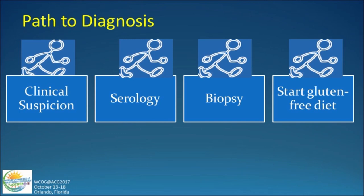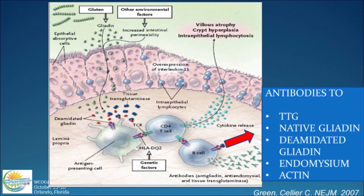A byproduct of this inflammatory response is the generation of antibodies: antibodies to tissue transglutaminase, antibodies to gliadin, antibodies to deamidated gliadin peptides, endomesial antibodies — whose autoantigen is tissue transglutaminase — and the development of antibodies to actin. Celiac disease is the only disease I know of, second to autoimmune hepatitis, for the presence of smooth muscle antibodies.